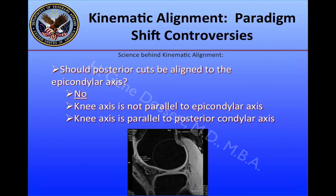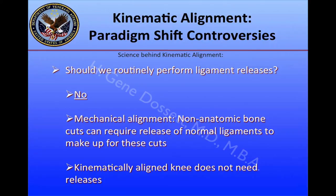Another controversy: should the posterior cuts be aligned to the epicondylar axis? The answer is no. The knee axis is not parallel to the epicondylar axis; the femoral axis is not parallel to the epicondylar axis. The femoral axis is parallel to the posterior condylar axis. Should we routinely perform ligament releases? The answer is also no. With mechanical alignment, non-anatomic bone cuts can require release of normal ligaments. In a kinematically aligned knee, we do not need to do ligament releases.